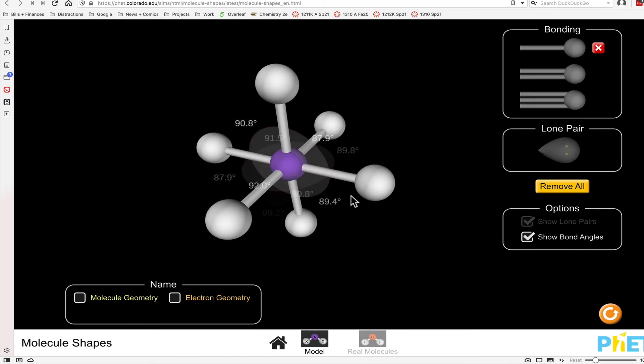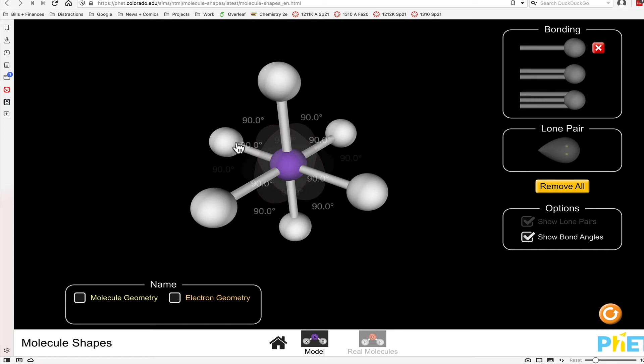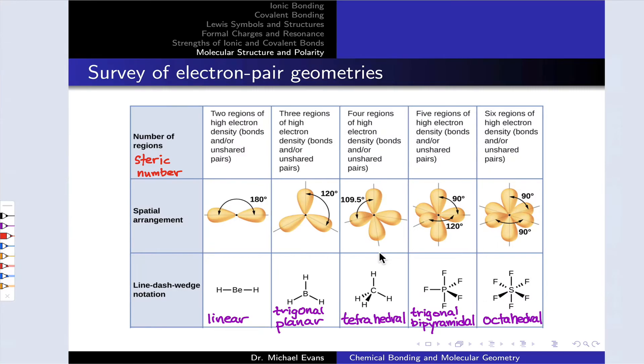Finally, if we add a sixth region of electron density, we're now at the octahedral geometry, which sort of looks like Cartesian axes. I always imagine the X, Y, and Z axes in three dimensions. These are, for our purposes, the only five possibilities. Since for a given number of regions of electron density around a central atom, there's only one way to optimally position the electron clouds to minimize electron-electron repulsion. That's the beauty of VSEPR theory.